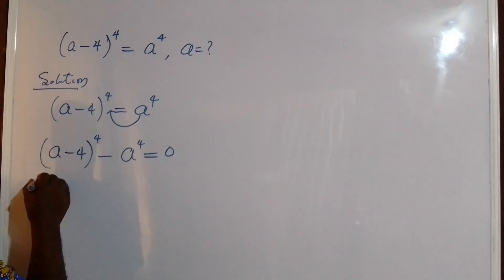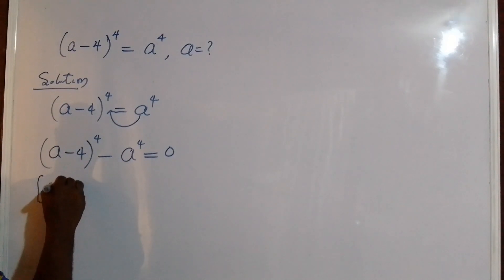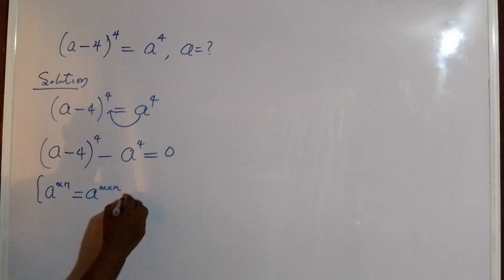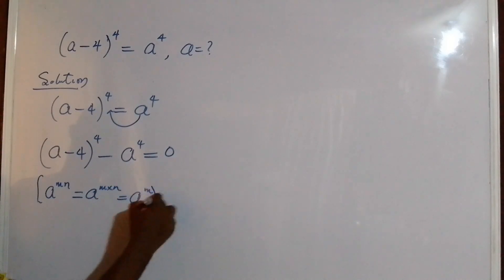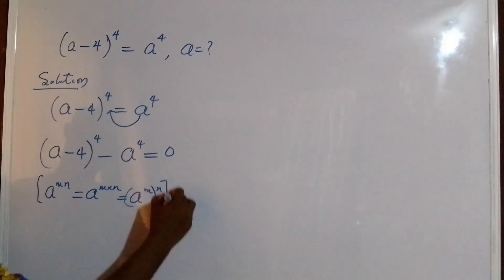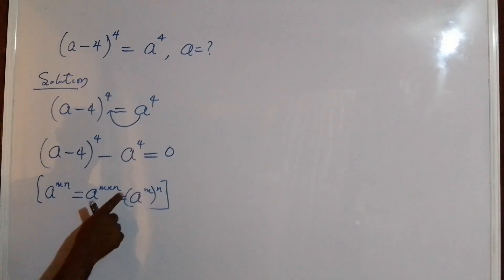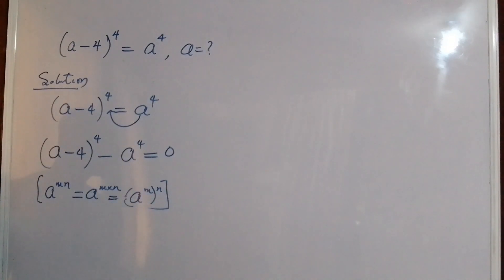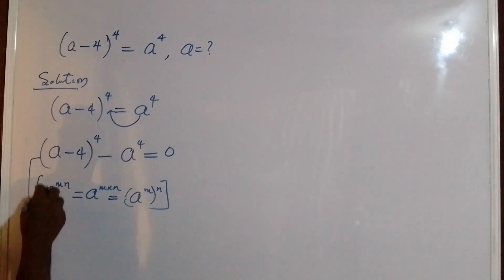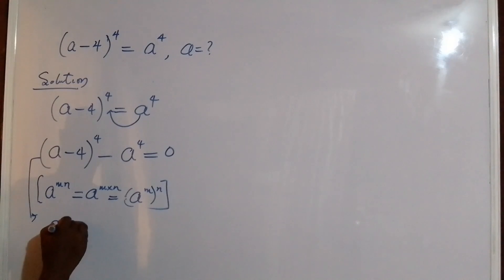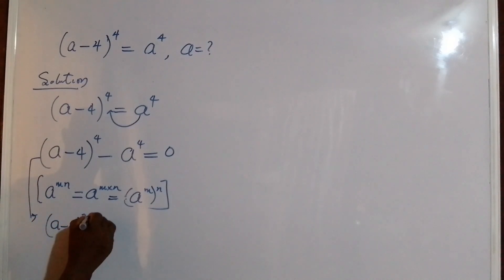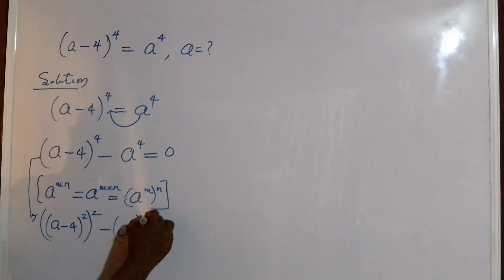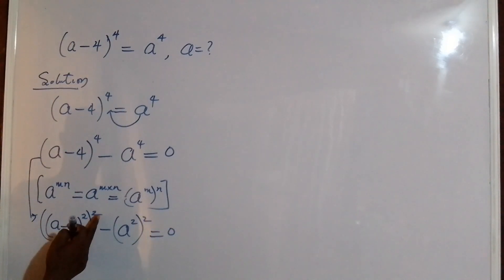Next is to rewrite this using the exponential law: if I have a to the power of m times n, this is the same as a to the power of m, all to the power of n. I'm going to apply this exponential rule to both terms of this equation, and we are going to get (a minus 4) squared, all to the power of 2, minus a squared, all to the power of 2, equal to zero. Of course, 2 multiplied by 2 gives us 4.